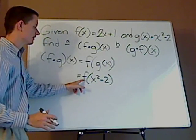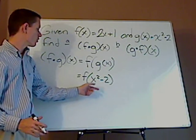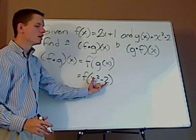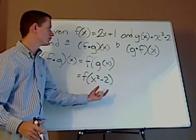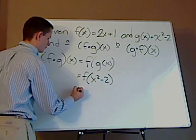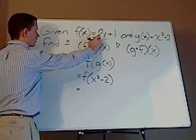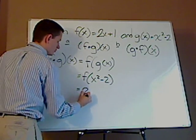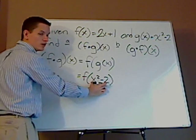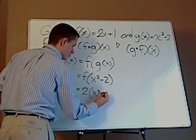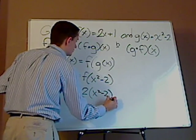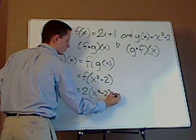Then you have your outside. This is like saying f of x. So wherever you're seeing x, you're going to replace it with x squared minus 2. So start with the outside, you have 2, and then you're replacing this x with this whole thing, x squared minus 2, and then you have plus 1.